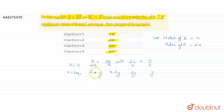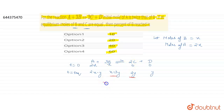We are given that at equilibrium moles of B and C are equal. Moles of B at equilibrium is X − 3Y and moles of C is 2Y. Setting them equal: X − 3Y = 2Y, which gives X = 5Y.